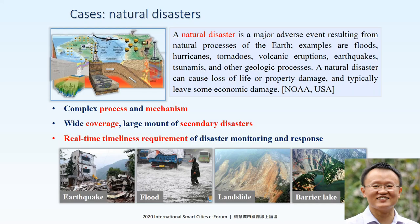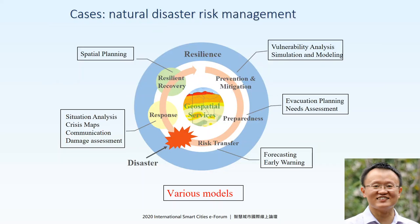For example, we take a natural disaster. We know natural disasters are complex and involve complex process mechanisms. While coverage often involves large amounts of secondary disasters, they also require real-time response for disaster monitoring. Here shows the life cycle of the natural disaster risk management — from the risk prevention, mitigation, preparedness, risk transfer, response, to resilient recovery. During this life cycle, there are various models involved in risk management.